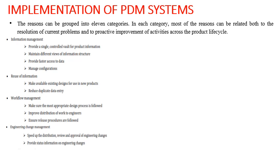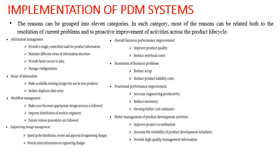The fourth category is engineering change management, which speeds up the distribution, review, and approval of engineering changes and provides status information on those changes. The fifth is overall business performance improvement — improving product quality and reducing product cost. The sixth is resolution of business problems — reducing scrap, reducing errors, and reducing product liability costs. The seventh is functional performance improvement — increasing engineering productivity and developing better cost estimates. The eighth is better management of product development activities — improving project coordination, increasing reliability of development schedules, and providing high-quality management information.